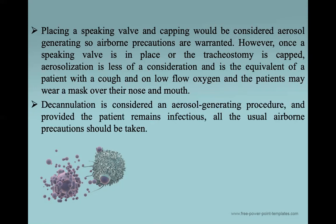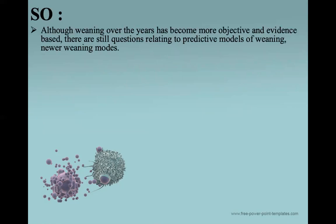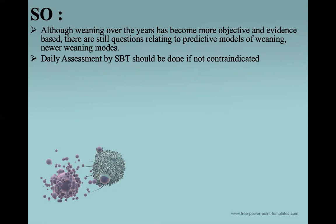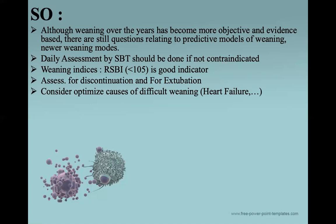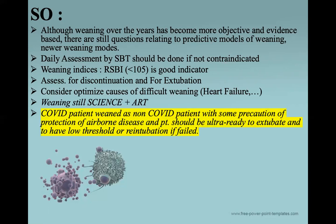Decannulation is also considered an aerosol-generating procedure, and provided the patient remains infectious, all usual airborne precautions should be taken. To summarize the key messages: Although weaning has become more objective and evidence-based over the years, questions remain regarding predictive models and newer weaning modes. Daily assessment by spontaneous breathing trial should be done if not contraindicated. The RSBI with a threshold of 105 is a good indicator. Assess for discontinuation and extubation. Consider and optimize causes of difficult weaning like heart failure or volume overload. Weaning is still science plus art. COVID patients are weaned as non-COVID patients with precautions for airborne disease protection. Patients should be 'ultra-ready' — not just ready — before extubation, and we must have a low threshold for re-intubation if extubation fails.